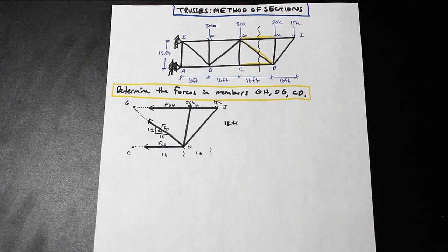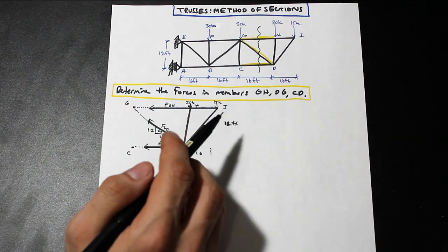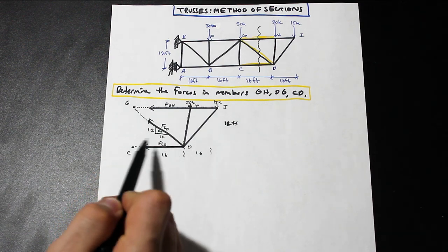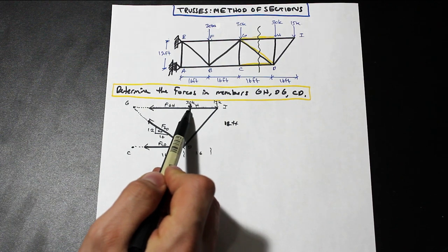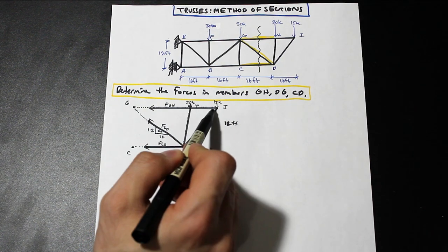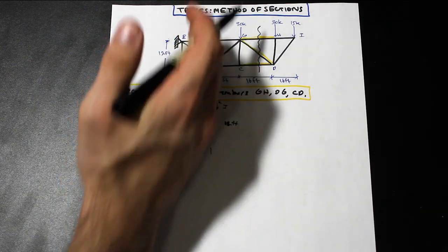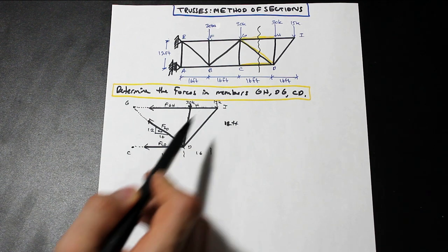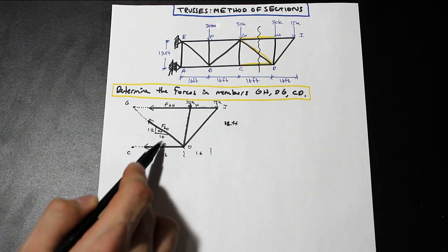Okay, so the first step in determining our three member forces here is we're going to take the moment about somewhere. So what you want to do is you want to take the moment about a point that leaves you only one unknown. So what I mean by that is if, for example, I was going to go over here and take the point about H, none of the members that go through H are going to have any moment because they're going through the axis of the point in the moment, so there's no eccentricity. But if I take the moment about H, I have FGD and I have FCD. So I'm going to have two unknowns that I can't solve for.